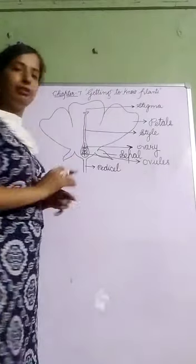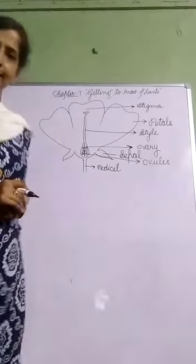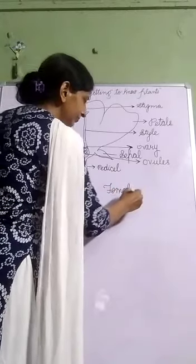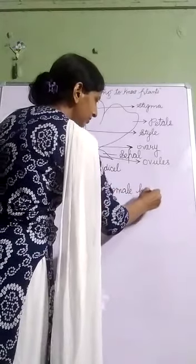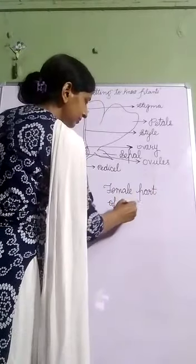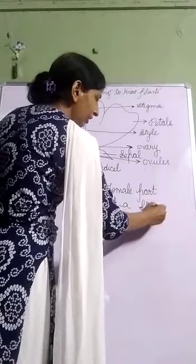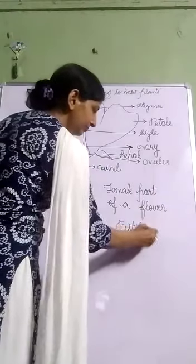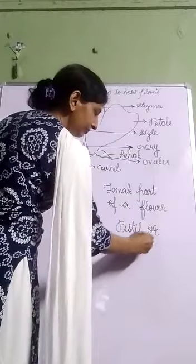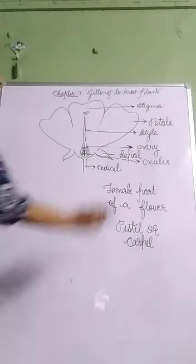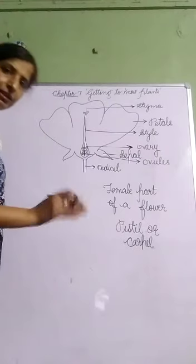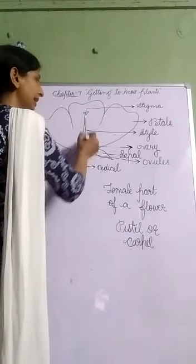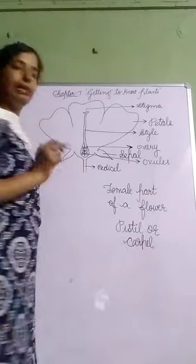So here I have told you about the female part. The female part of a flower is called pistil or carpel — both names refer to the same thing. The female part of a flower consists of stigma, style, ovary, and inside the ovary there are ovules.